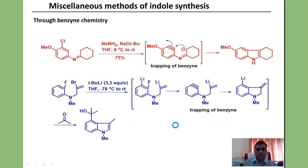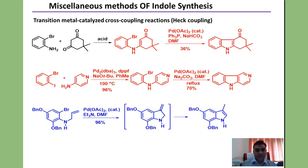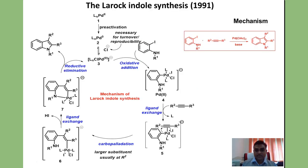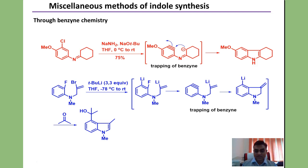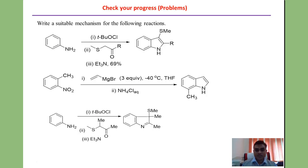In this way we have learned three name reactions for the synthesis of indole: Bartoli indole synthesis employing vinylmagnesium bromide as substrate, Gassman indole synthesis involving sulfur ylide chemistry, and Larock synthesis employing palladium chemistry in a carbopalladation heteroannulation reaction. We have also seen some examples of benzyne chemistry for the synthesis of indole.